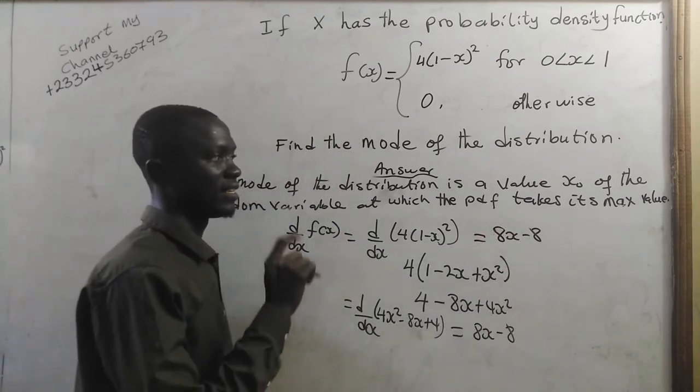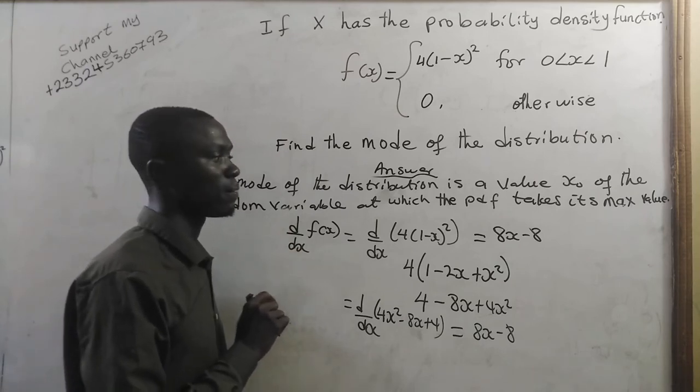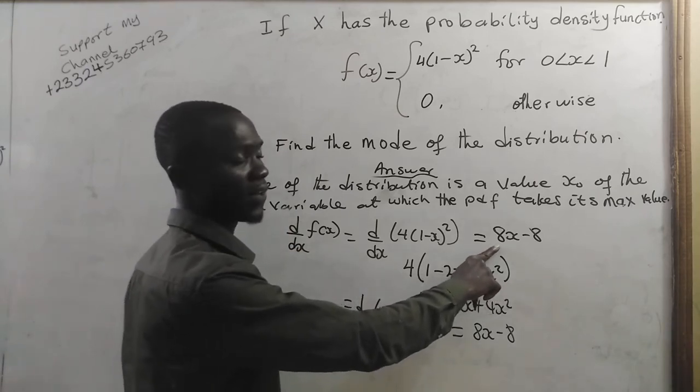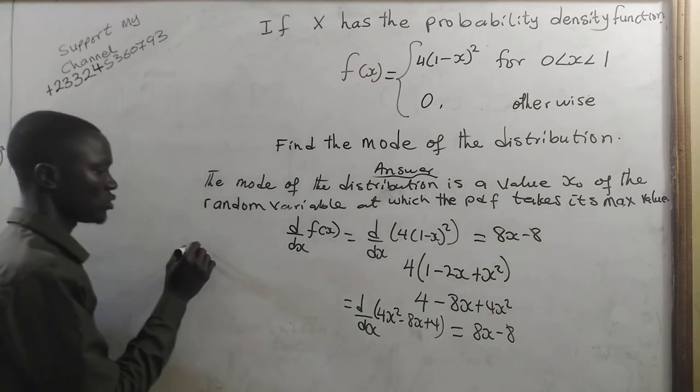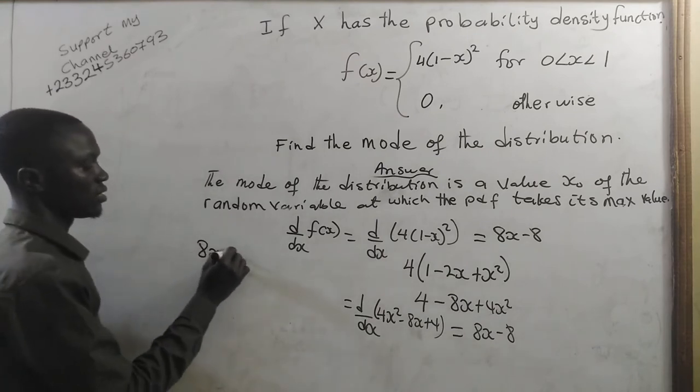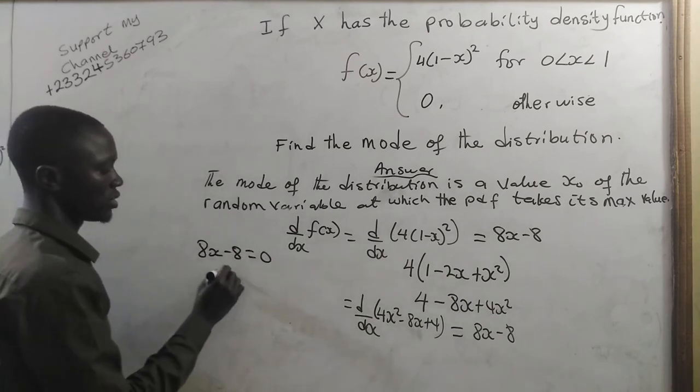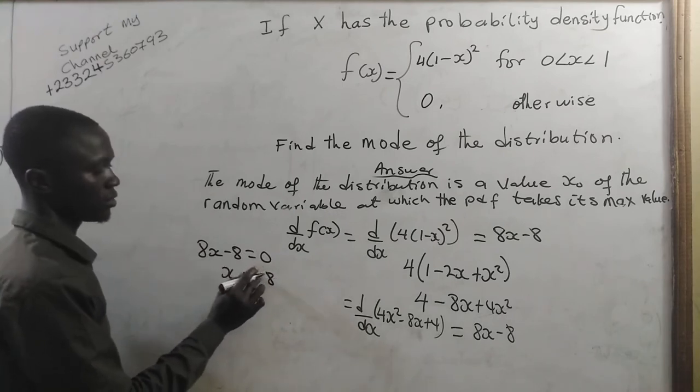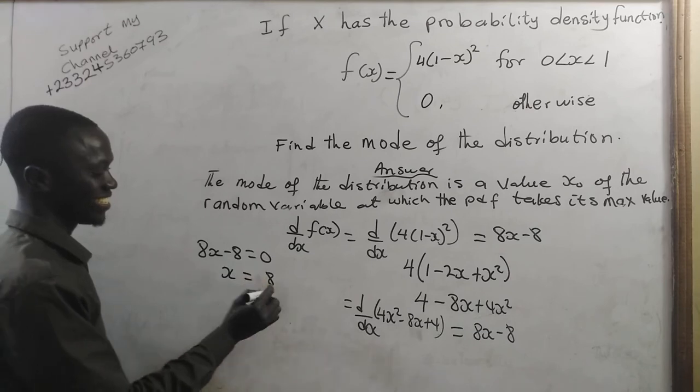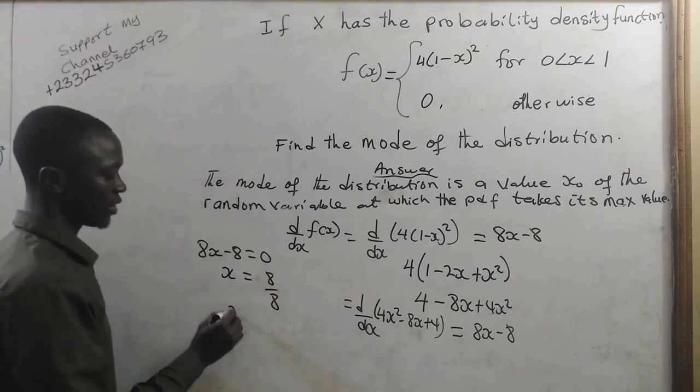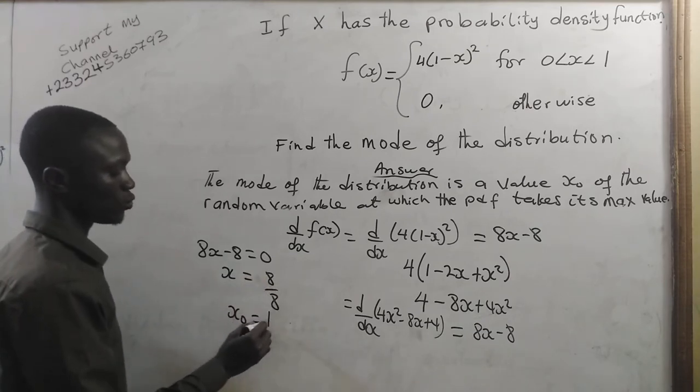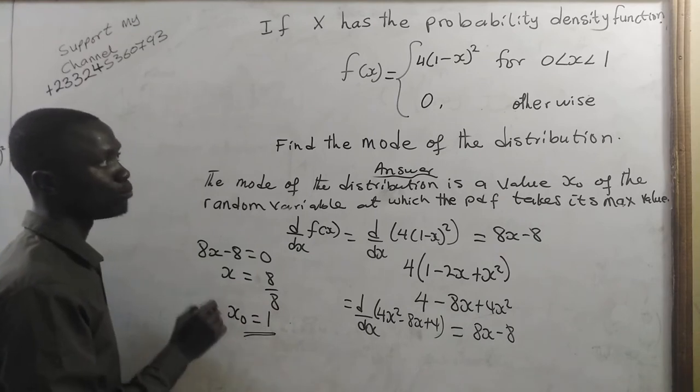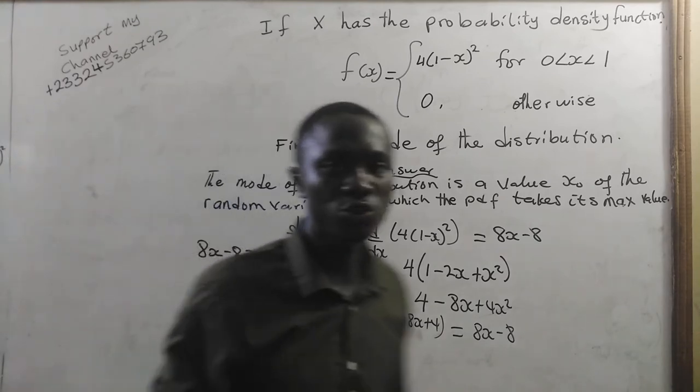Now, having this, the value of x naught is found by equating the derivative of f(x) to 0. So, we have 8x minus 8 equals 0, x equals positive 8 divided by 8. Now, we have our x naught equal to 1, and this is the mode of the distribution.